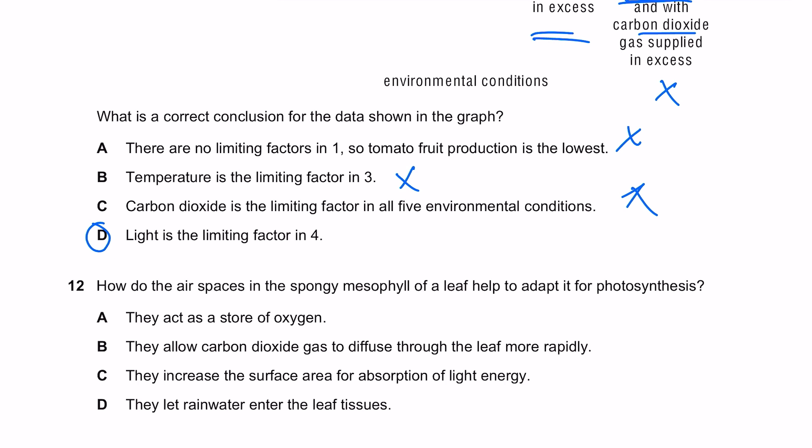How do the air spaces in the spongy mesophyll of a leaf help to adapt it for photosynthesis? They allow CO2 gas to diffuse through the leaf more rapidly. That's exactly the role of the spongy mesophyll gaps.